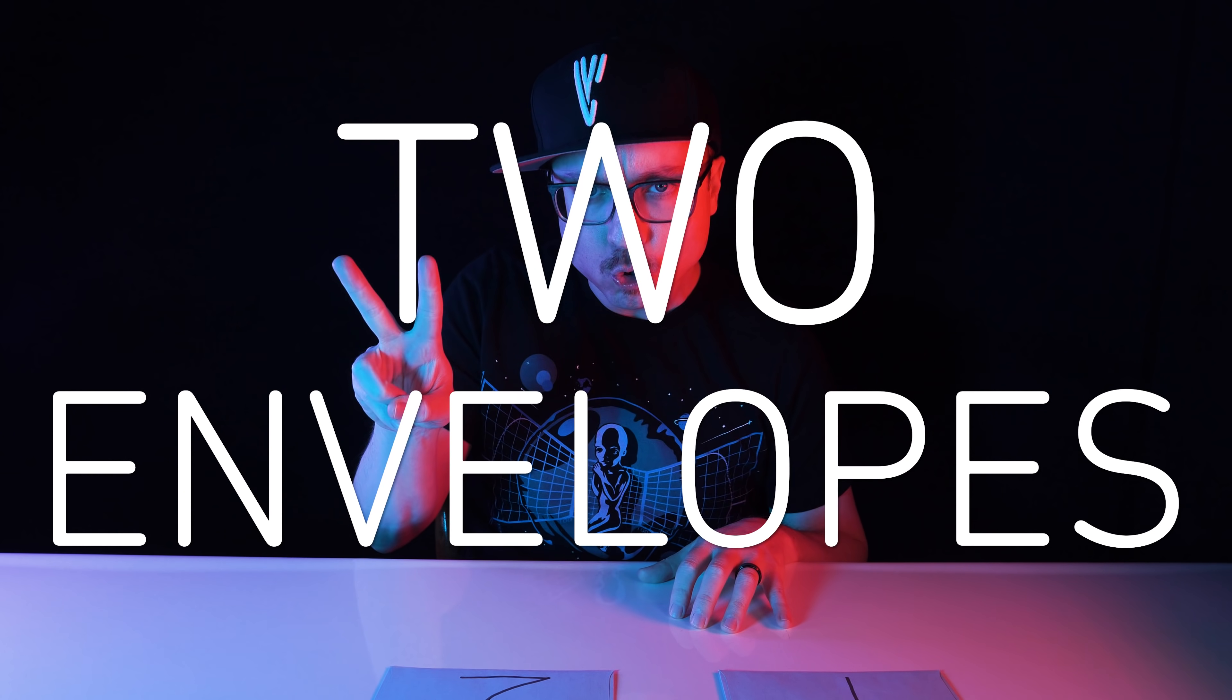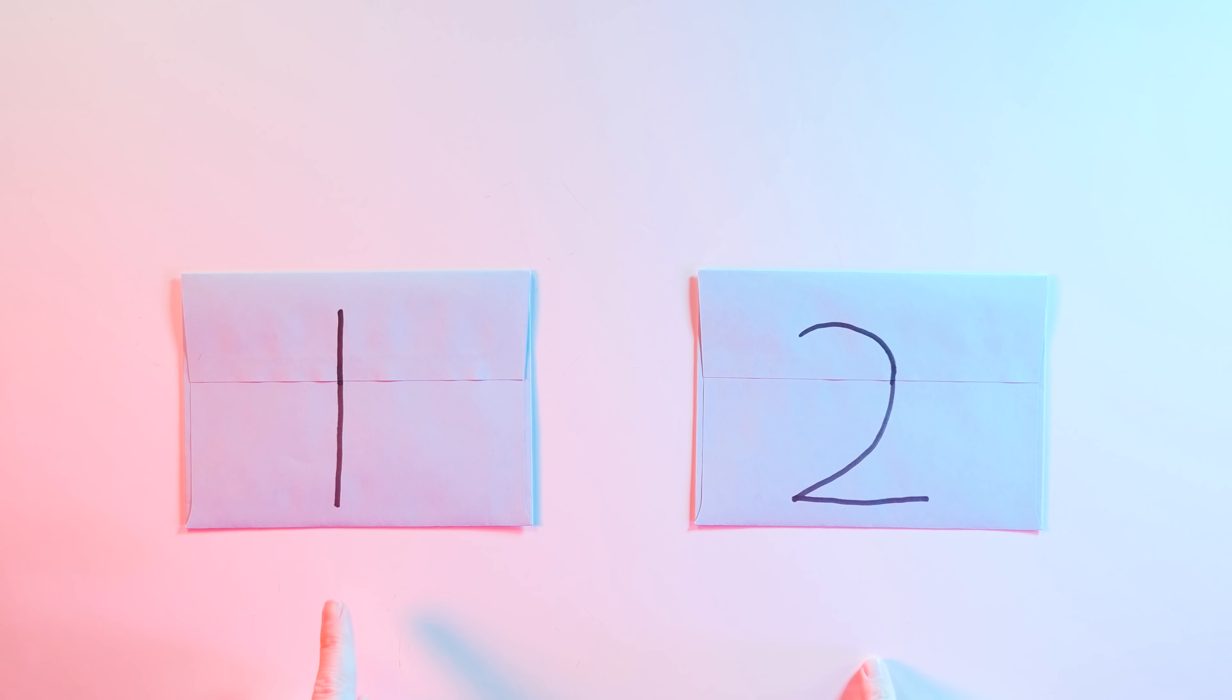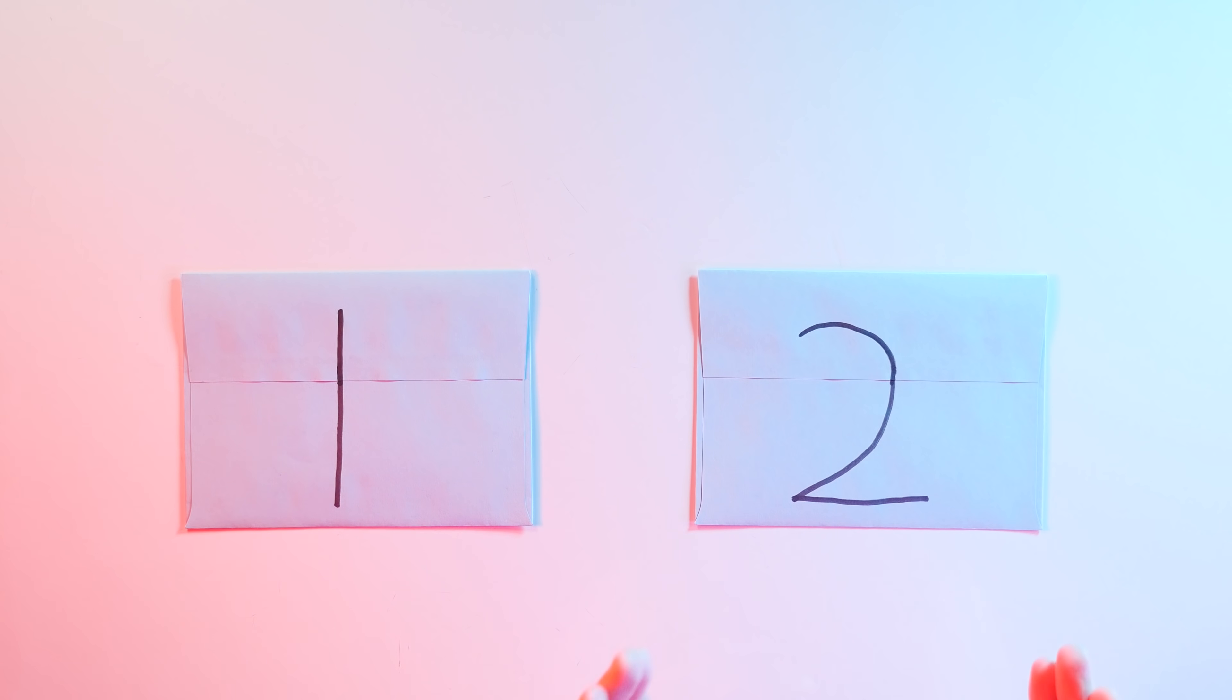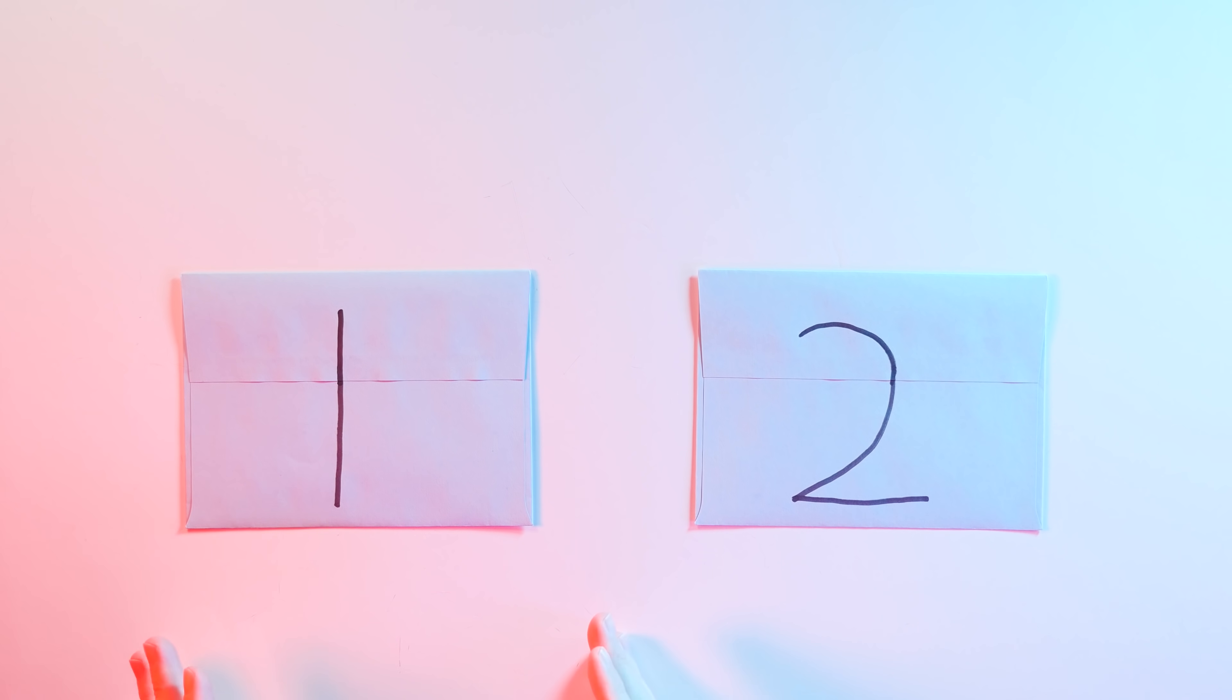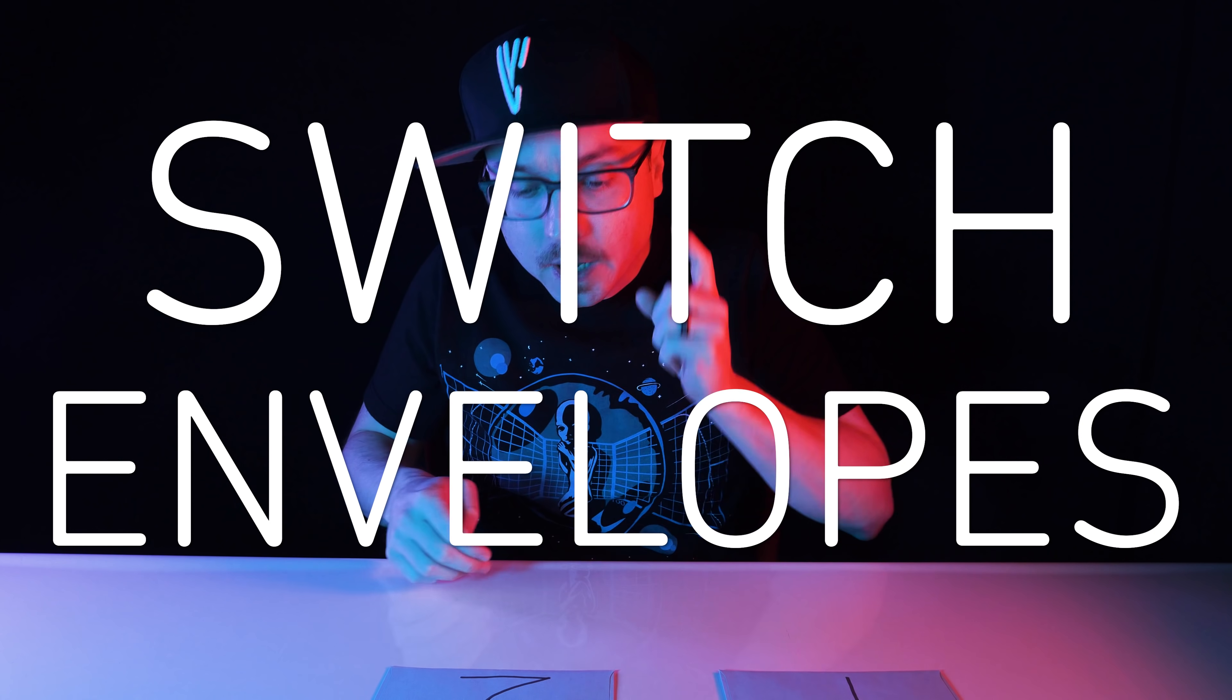Vsauce! Kevin here with two envelopes. One of them contains twice as much money as the other one, and you get to choose which one you want to take. But before you open your envelope and find out whether you've won the smaller prize or the larger prize, you have the opportunity to switch to the other envelope.